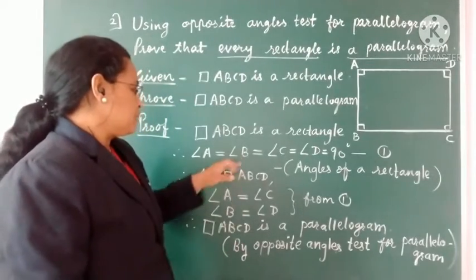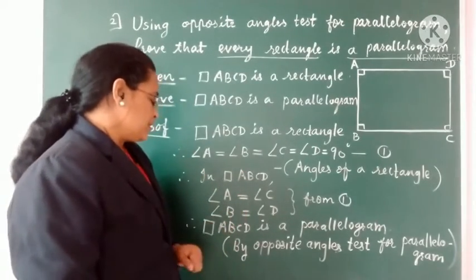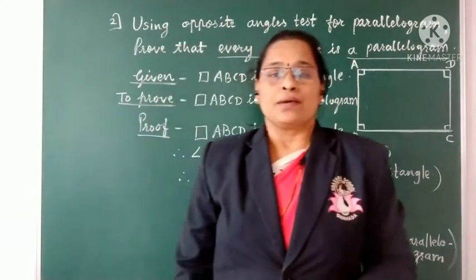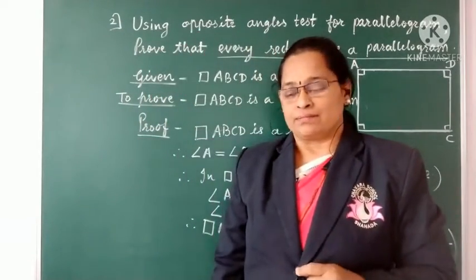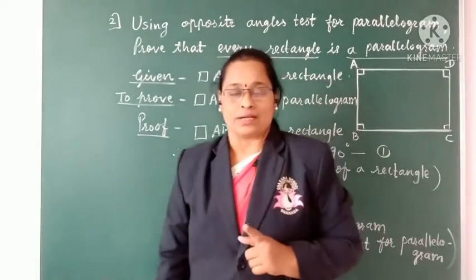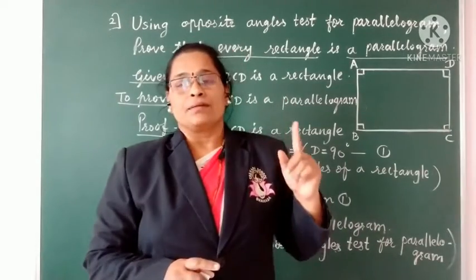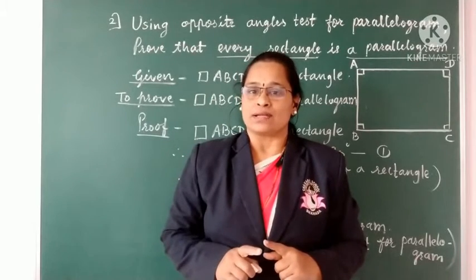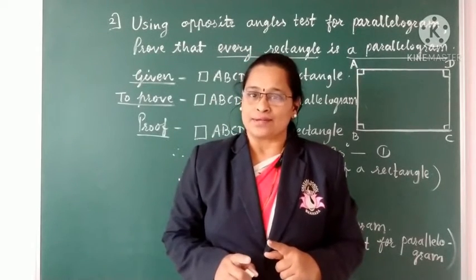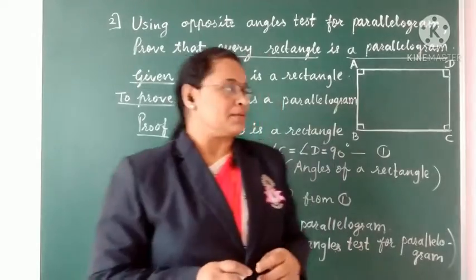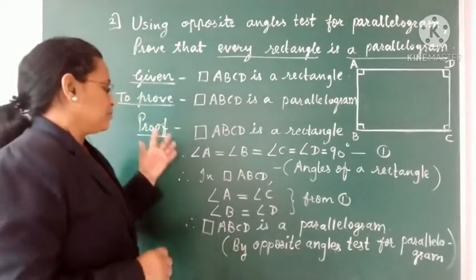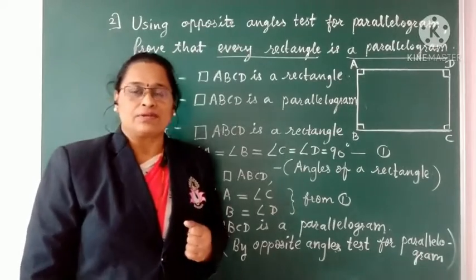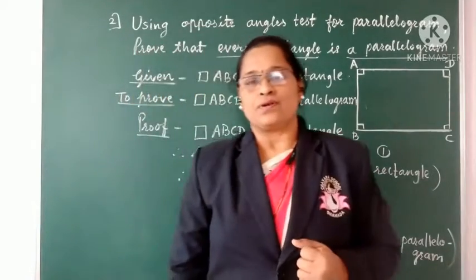Since the pair of opposite angles are congruent, we can say that quadrilateral ABCD is a parallelogram — by the test for parallelogram. The statement is: in a quadrilateral, if a pair of opposite angles are congruent, then that quadrilateral is a parallelogram. Therefore, every rectangle is a parallelogram.